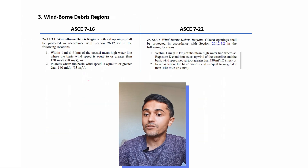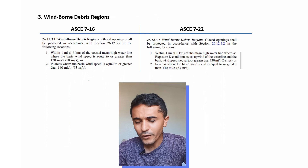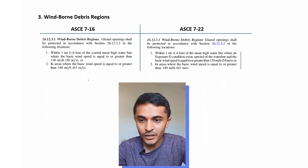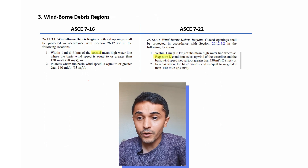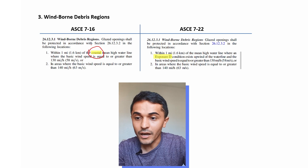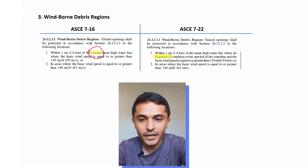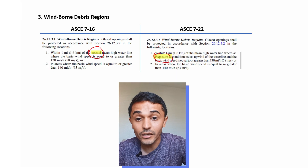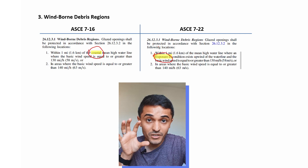The third change is for windborne debris regions, and this is more of a nomenclature refinement. Previously the term 'coastal mean high waterline' was used, which can be a little vague, so now it was adjusted to say 'Exposure D,' making it more specific.